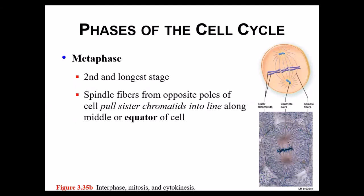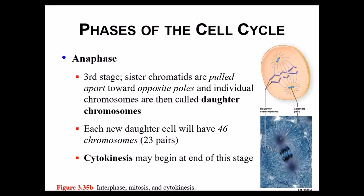In metaphase, the second and actually longest stage, the chromosomes move to the middle of the cell and all line up there. The spindle fibers — connected to the centromere — help migrate these chromosomes to the middle of the cell. In anaphase, the third stage, the individual chromatids are split apart and, because they're connected to the spindle fibers, are pulled to the opposite ends of the cell. For humans, each cell has 46 chromosomes or 23 pairs, and at the end of cell division you'll still have that same number of 46 chromosomes. The process of cytokinesis also begins at this stage.